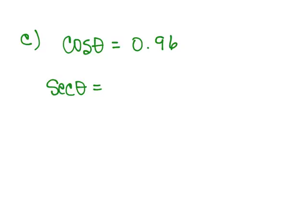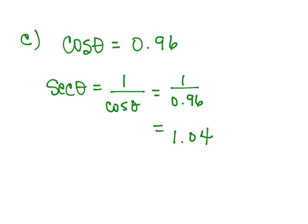In example C, we're asked to find the secant of theta, and we know the cosine of theta is 0.96. Secant is the reciprocal of cosine, so the secant of theta is 1 divided by the cosine of theta, which is 1 divided by 0.96. Entering that on our calculator, we come up with 1.0416 repeating.